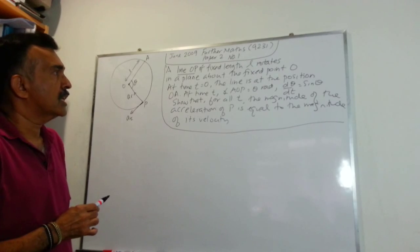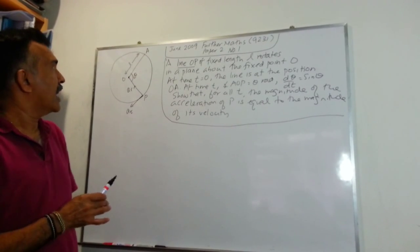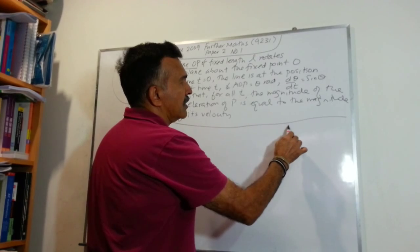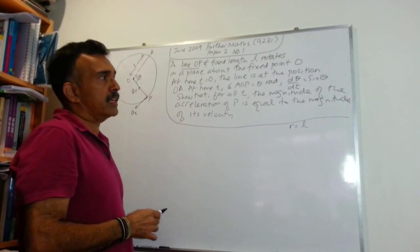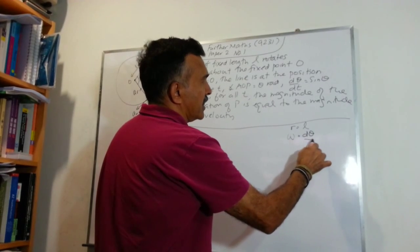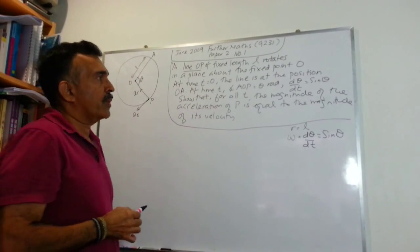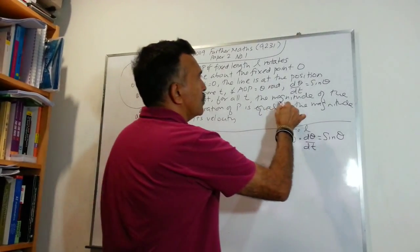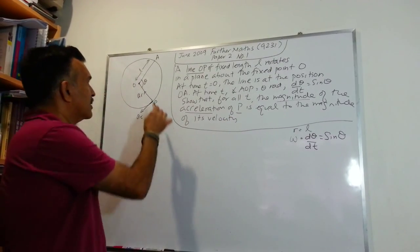So that's the question. Looking at the problem, we are dealing with circular motion. The radius in this case will be L. We are given dθ/dt, which is the angular velocity ω, and we are given that it equals sin θ. So we have ω equals sin θ. We are asked to find the magnitude of the acceleration of point P on the circumference of the circle.